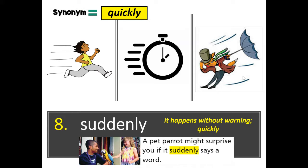A synonym for 'suddenly' is 'quickly' — q-u-i-c-k-l-y. The root word is 'quick.' Think about it: what is something that can happen suddenly, without warning or quickly?